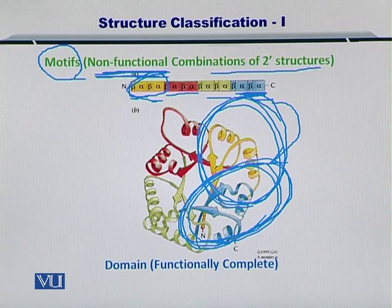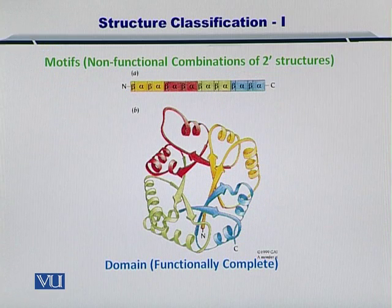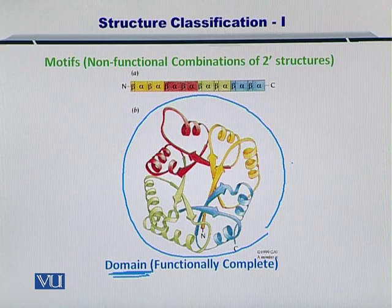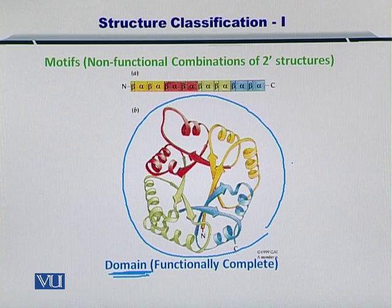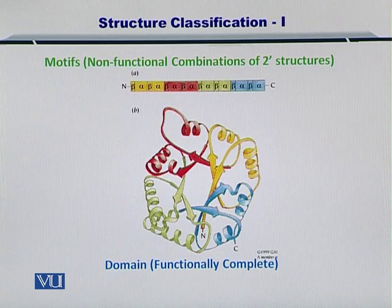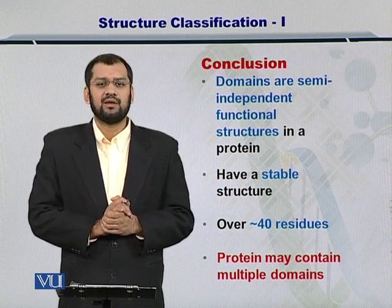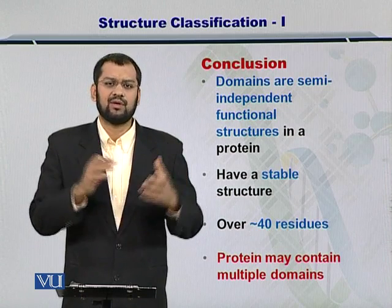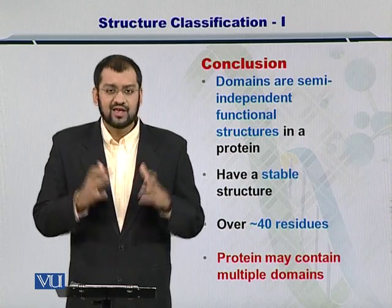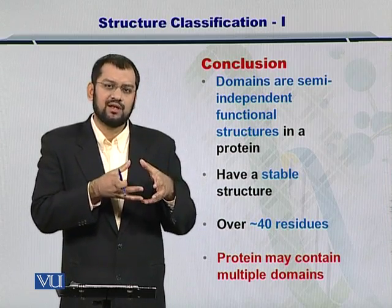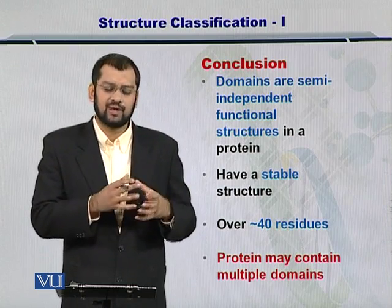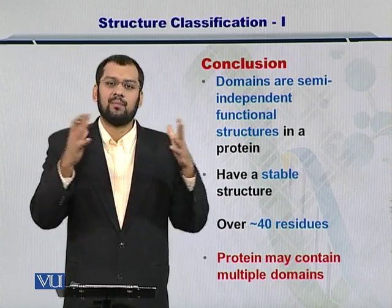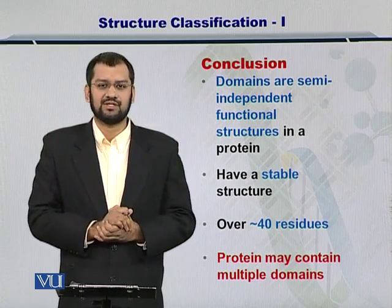It is important to note that once all of these motifs come together, they actually form something called a domain. A domain in a protein is functionally complete, and therefore a domain can be an ideal target if you are to study conservation of different functions or structures in proteins. To conclude, domains are semi-independent functional units within a protein structure. They are about 40 to 50 amino acids or even bigger, and they have a stable structure because they have to perform a specific function independently. A protein may also contain multiple domains in its entire conformation.